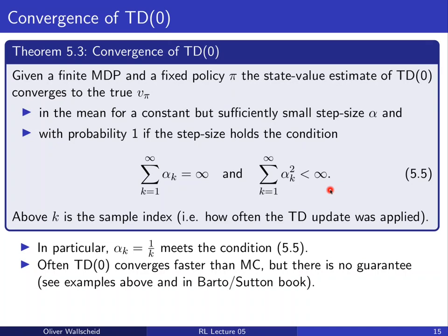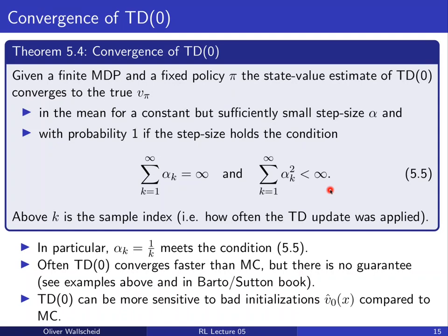In practice, TD can converge slightly faster than Monte Carlo in some examples, but there is no guarantee — it depends on the application. TD can also be sensitive to bad initializations: if V_0 is far from the true value, TD may need many more steps than Monte Carlo to reach the true value.